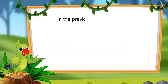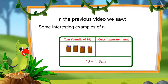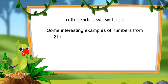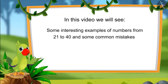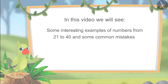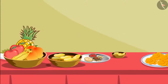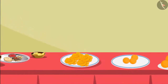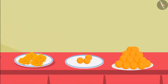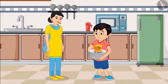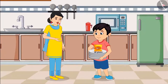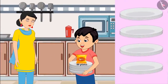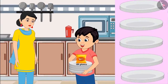Hello children. In the previous video, we saw some interesting examples of numbers from 21 to 40. In this video, we will see some more interesting examples and learn about some common mistakes which should not be done. Today a lot of guests are coming to Chotu's house. Chotu's mother has sent Chotu to the market to get paper plates and spoons. Chotu returns: 'Mother, I have got the plates and spoons.' Mummy asks, 'Chotu, how many plates have you got?' 'Mummy, on this packet it's written 40 plates — meaning 4 groups of 10 plates and another group of 10 plates with it.'